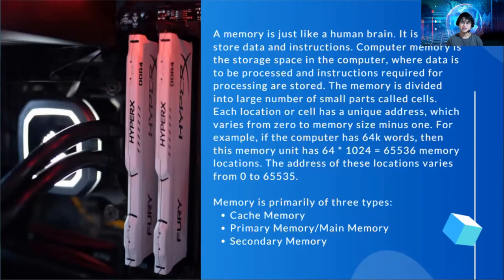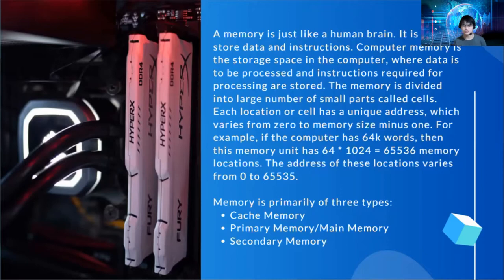We have different memory types. We have cache, we also have primary, and we also have secondary. Again, what is memory? A memory is used to store data and instructions. A computer will not run without a memory, just like a human being.